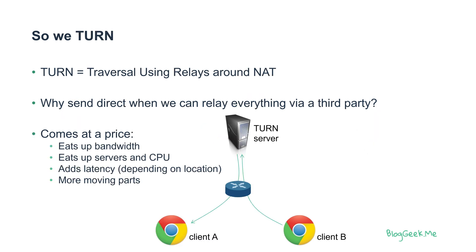What do we do in such a case? We use TURN. TURN is Traversal Using Relays around NATs, and what it does is simply relay all traffic through a TURN server if we can't get the public IP address approach to work. This comes with a price — it eats up more bandwidth on the server side, it eats up server CPU, it costs more to allocate and run this service, it adds some latency depending on the location of your TURN servers, and it adds more moving parts to your service, which is always a headache.